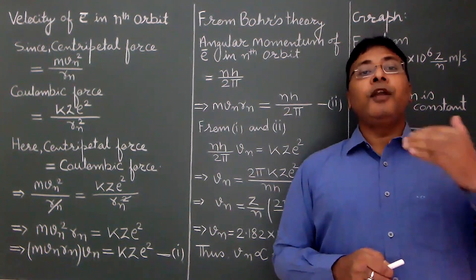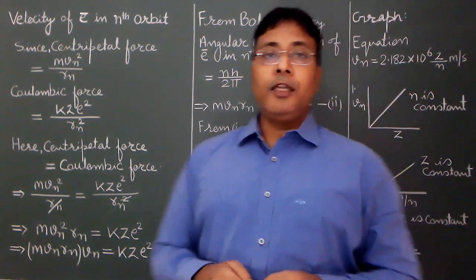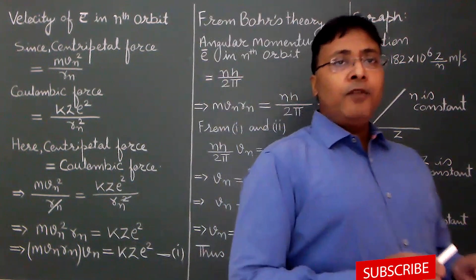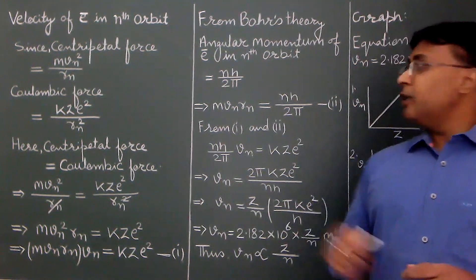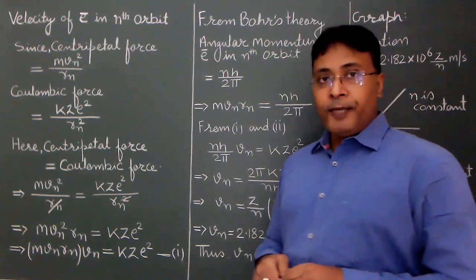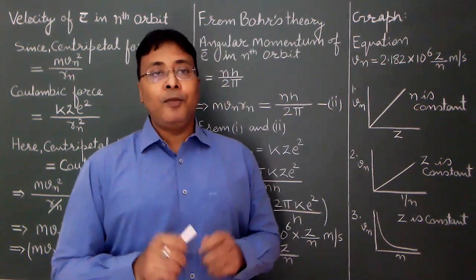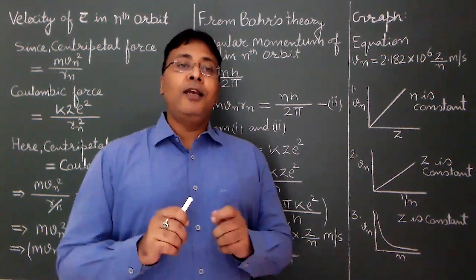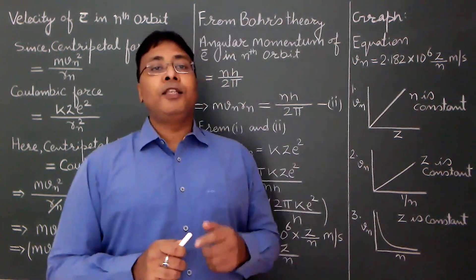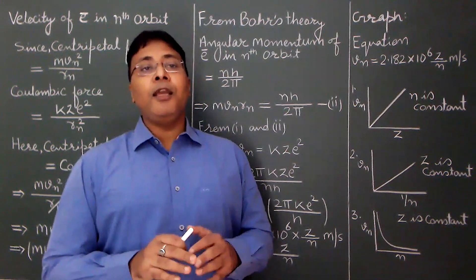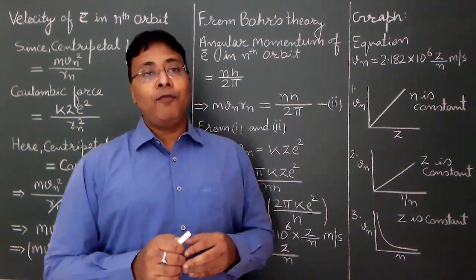Now let us understand some graphical representations. The velocity equation is vn = 2.182 × 10⁶ × (z/n) m/s. As discussed before, to plot a graph, establish a relation between the x-axis variable and y-axis variable. If the relation gives y = mx + c, the graph is a straight line; if y = mx, it passes through the origin.